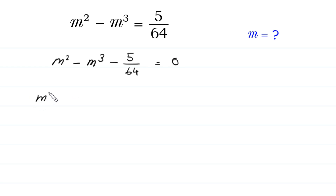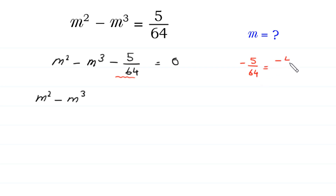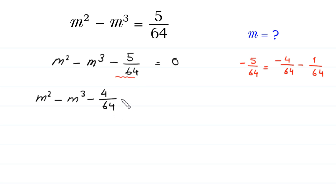Next, m squared minus m cubed. Now we split this negative 5 over 64 as negative 4 over 64 minus 1 over 64, is equal to 0.